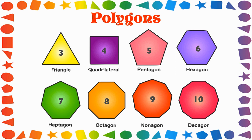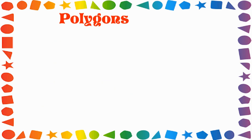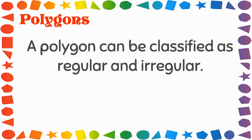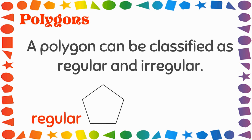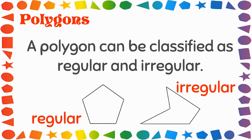We also talked about polygons being classified as regular or irregular. What does that mean? Remember we said that regular polygons have all sides the same length — equal length — and all angles are equal. In an irregular polygon, we can see that all sides are not equal and all angles within that polygon are not equal as well.